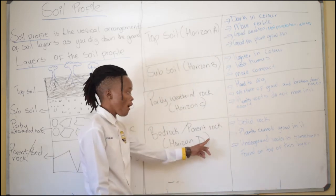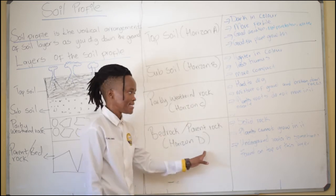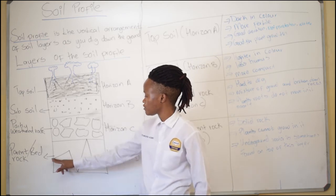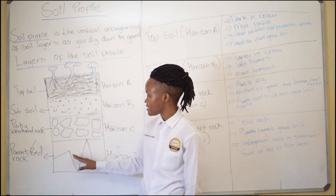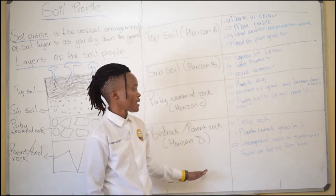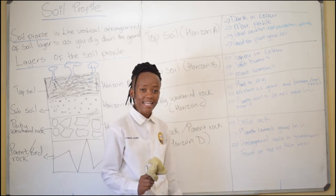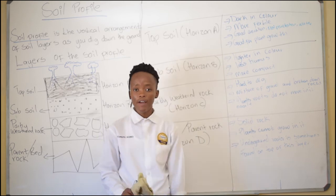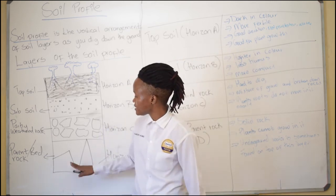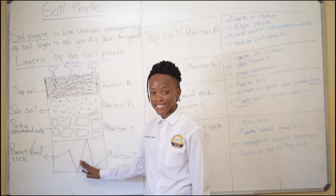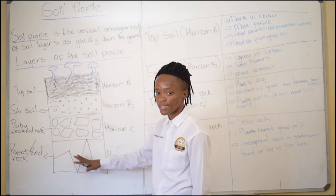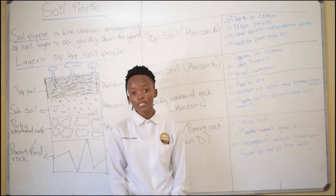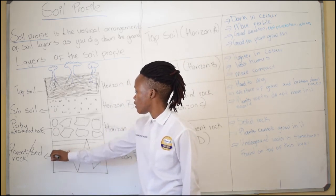The last layer is bedrock or parent rock, which is Horizon D — solid rock. Parent rock is the foundation and is made up of solid rock. As you can see, this is the parent rock or bedrock. Plants cannot grow in it. This is the last layer when you dig down, and usually we find this layer when digging deep holes — you can't just find it when planting. Roots cannot pass through this layer. Underground water is sometimes found on top of this layer, so there are situations where you can find water sitting on top of this rock.